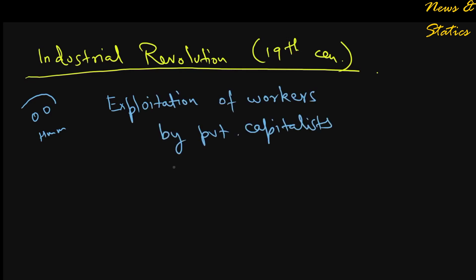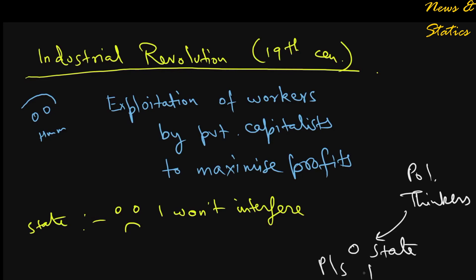But the industrial revolution of the 19th century changed the perception among political thinkers when they saw private capitalists exploiting the working class to maximize profits and a minimalist state not interfering to stop this exploitation. They called upon the state to positively intervene and to ensure that the rights of the individual are preserved.